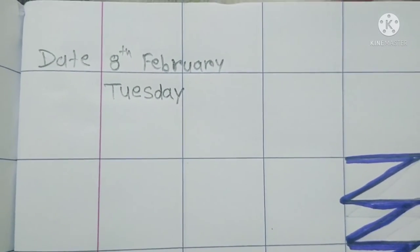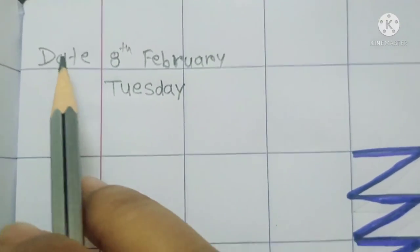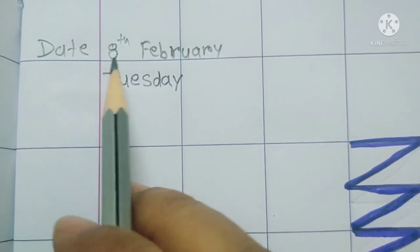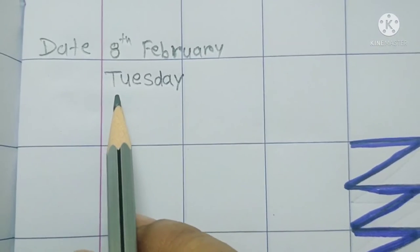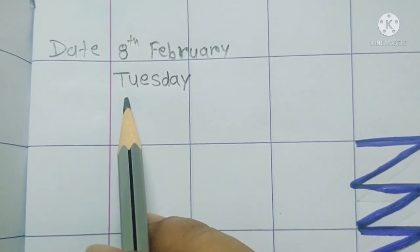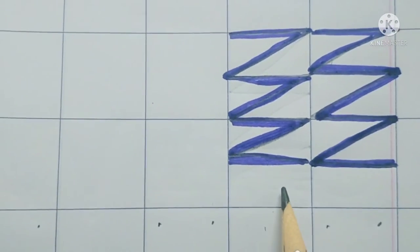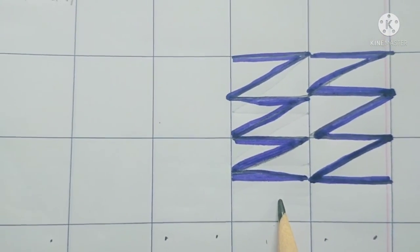Now open your textbook and write today's date. Today's date is 8th February, day Tuesday. Here we can draw a zigzag line.